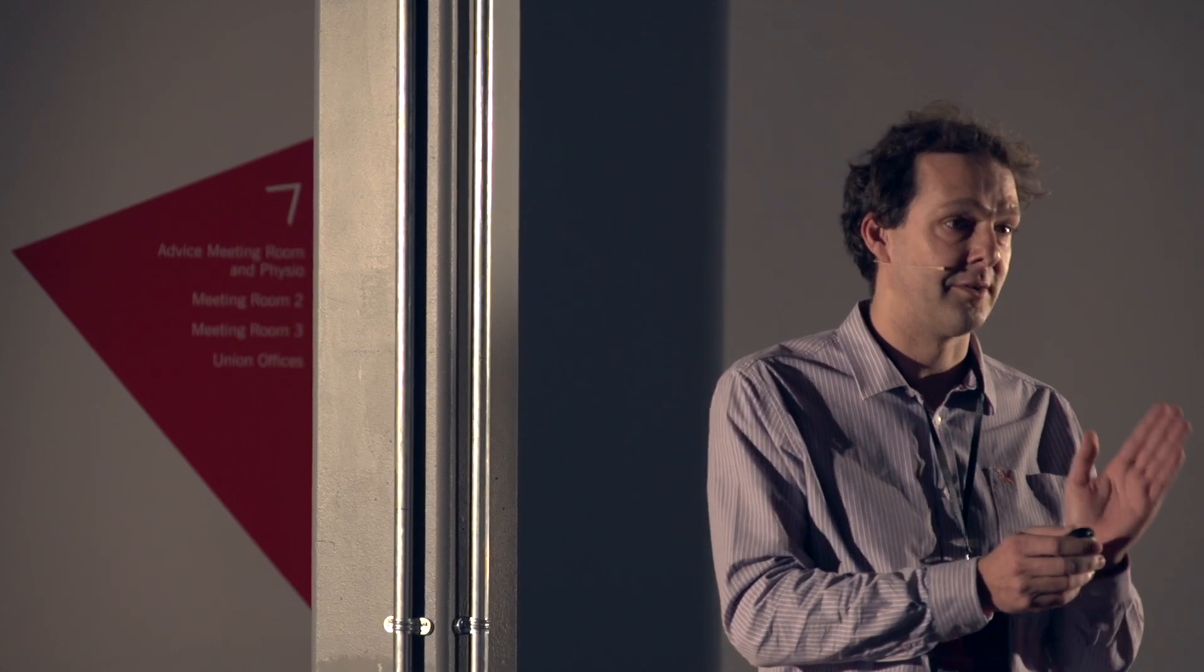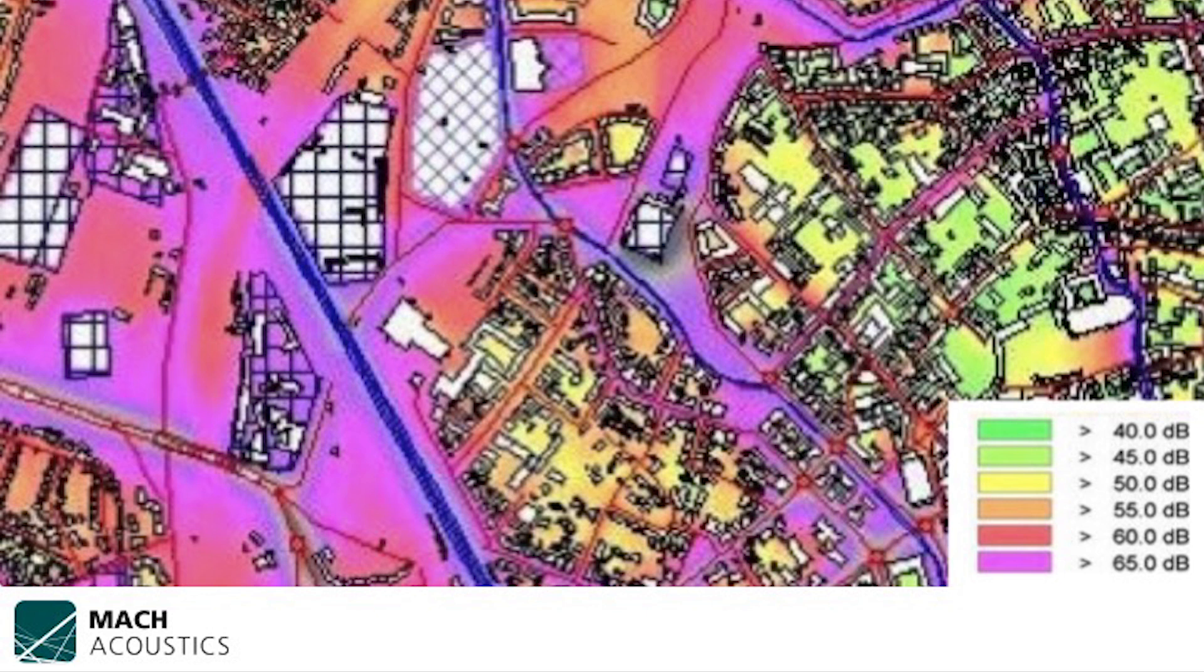I now want to look at the importance of getting the figure right for an open window. So if we look at this, this is a noise map. Basically, this is a motorway. You can see there's a high density of color at about 65 decibels. And these might be parks and cities which are nice and quiet.